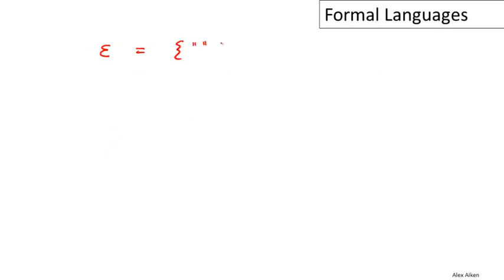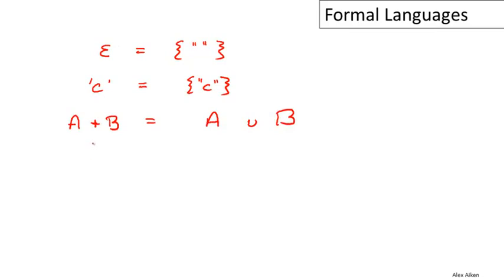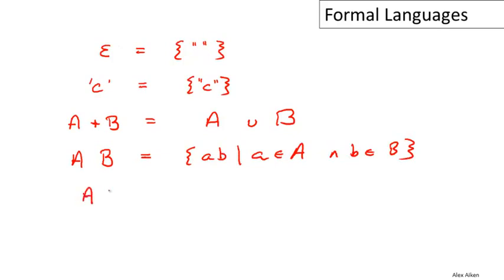Let me write down the meaning of regular expressions the way I wrote it in the last video. We had a regular expression Epsilon, which denoted a set containing just one string — the empty string. We had a regular expression C for every character in the alphabet, which denoted a set containing just one string, namely the single character C. Then we had compound expressions: A plus B, which was equal to the union of sets A and B; concatenation, where juxtaposing A and B formed a cross product selecting one string from each set; and finally, iteration — A star — which was the union over i greater than zero of all sets A to the i.